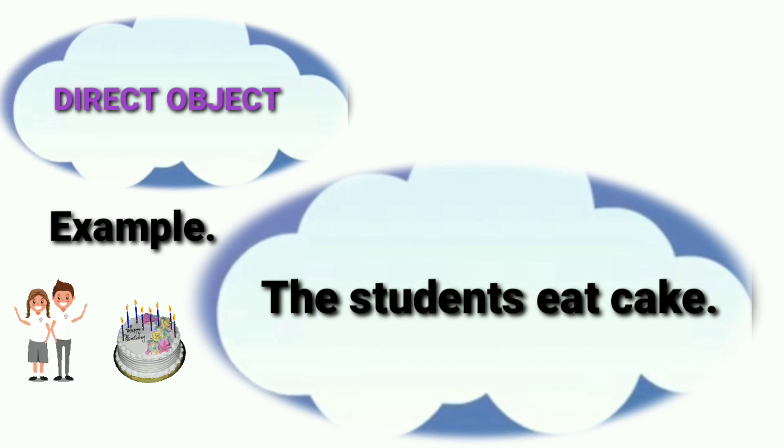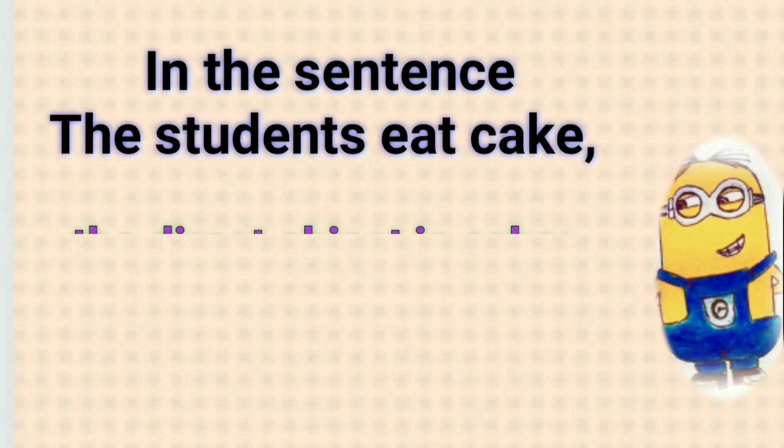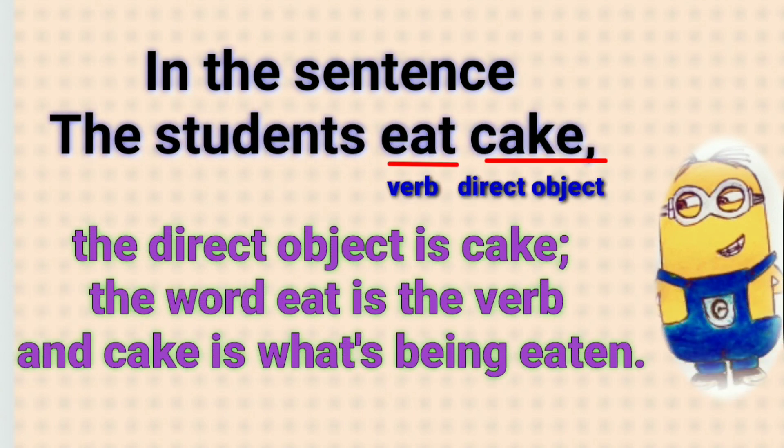For example, the students eat cake. In the sentence the students eat cake, the direct object is cake. The word eat is a verb and cake is what is being eaten.